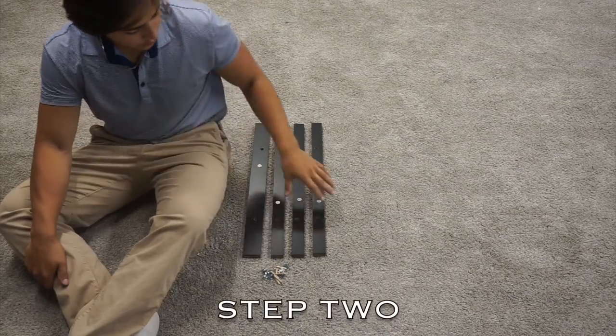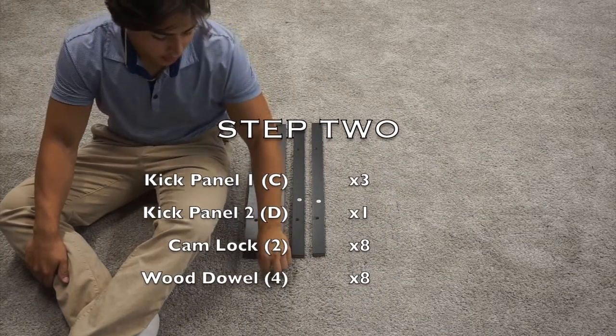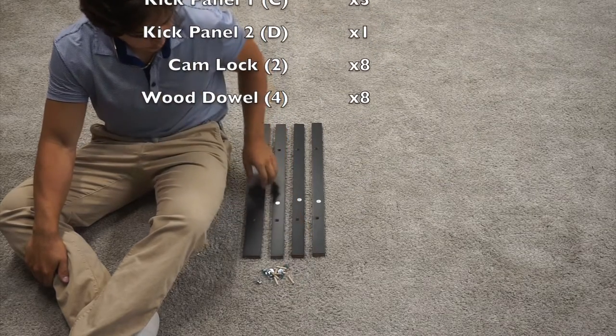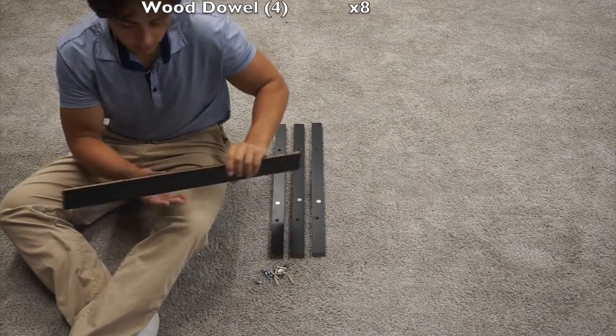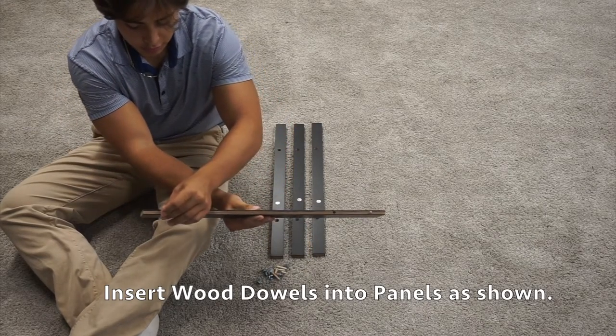For step two, you'll need your three C panels and your D panel, eight cam locks and eight wood dial pieces. You can start by inserting the wood dial pieces into the outer pre-drilled holes on each panel.